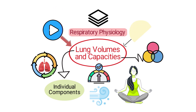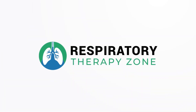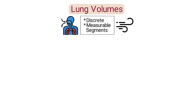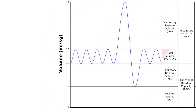We created this video to explain the difference between the two and provide a brief overview of this topic. Lung volumes refer to discrete measurable segments of air which can be associated with a specific phase of the breathing cycle. The four primary lung volumes include tidal volume, which is the volume of air inhaled or exhaled during a normal resting breath.